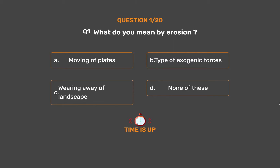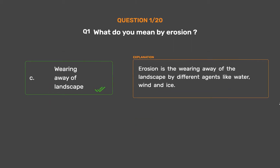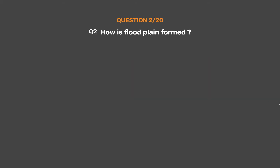The correct answer is Option C: Wearing away of landscape. Erosion is the wearing away of the landscape by different agents like water, wind and ice.